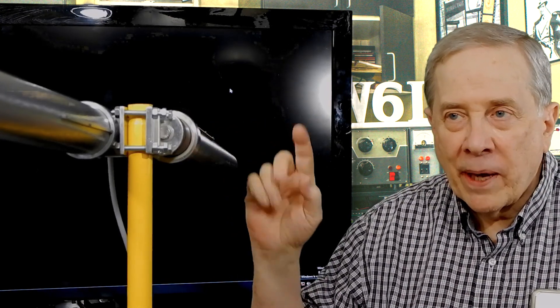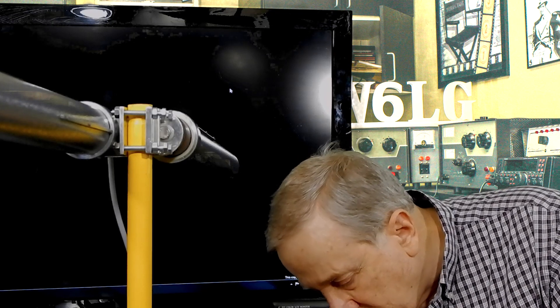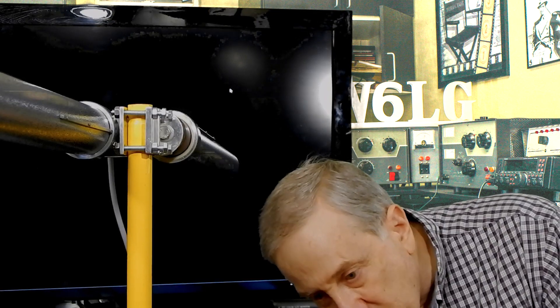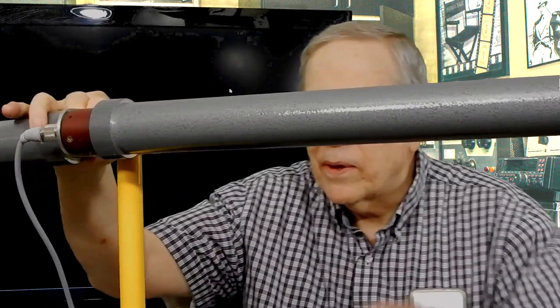This dipole antenna, even though it's about four and a half feet long with each tube being two feet, is actually tuned to 20 meters. I'm going to turn on my antenna analyzer here. The reason I was able to do that is there are loading coils in the middle that effectively shorten the length.